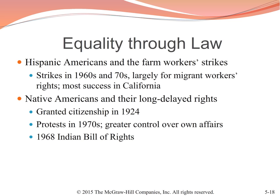Native Americans and their long-delayed rights are a sad history in the United States. Native Americans weren't granted citizenship until 1924. There was a series of protests in the 1970s, and as a result they were given greater control over their own affairs. In 1968, Native Americans were able to get the Indian Bill of Rights. But still, there is greater poverty and disparity amongst Native American populations, and we see, even today, the results of discrimination and oppression.